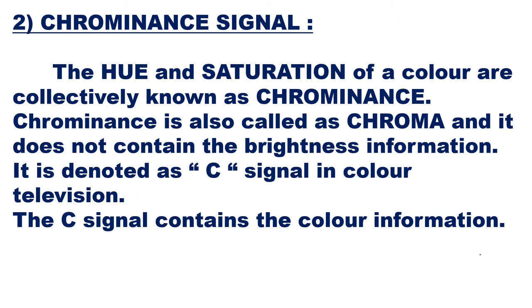The chrominance signal represents hue and saturation — the two attributes of color excluding brightness — collectively known as chrominance or chroma. It does not contain brightness information and is denoted as the C signal in color television. When studying the block diagram of a color TV transmitter and receiver, the Y signal gives brightness information and the C signal gives color information.